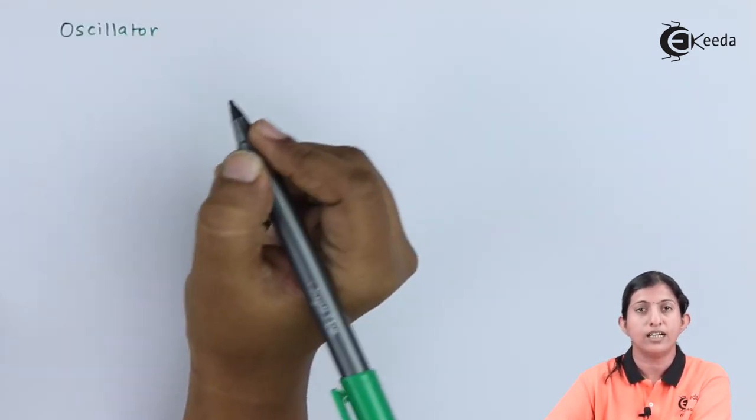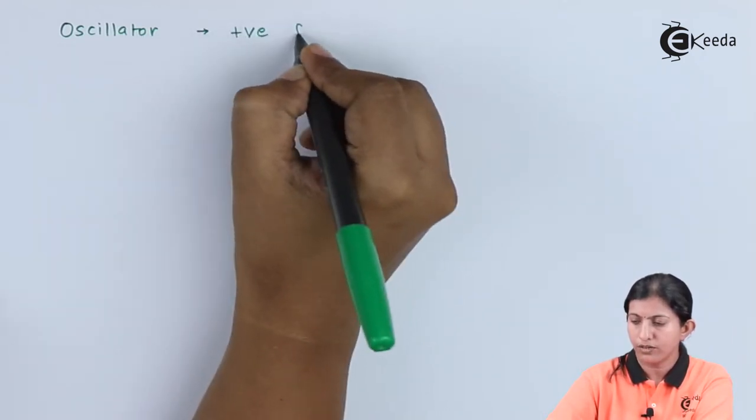We have already seen the types of feedback. Feedback is nothing but the part of the output signal applied back to the input. There are two types of feedback: positive feedback and negative feedback. In positive feedback, the input signal and feedback signal are in phase, so they get added and the input increases. That is why positive feedback is used in a circuit known as an oscillator — an oscillator is a device in which we use positive feedback.